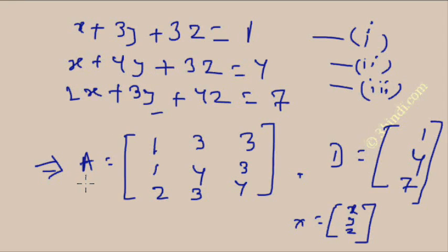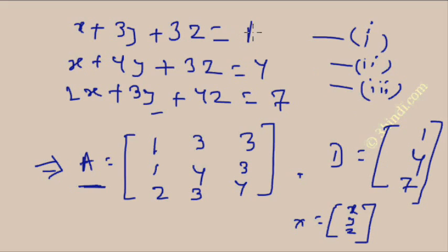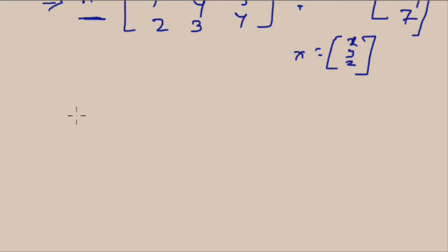The first step is to form the three matrices. Matrix A, the coefficient matrix, is [1 3 3 / 1 4 3 / 2 3 4]. Matrix D, the constants on the right side, is [1 4 7]. Matrix X contains the variables x, y, z.